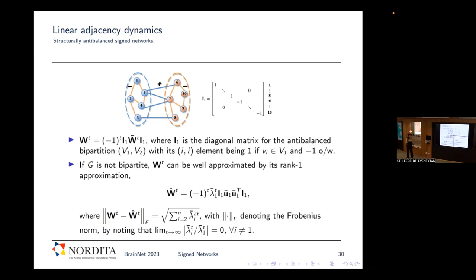A question was raised: depending on t, will the system be stable or unstable? The anti-balanced system oscillates, alternating signs between odd and even time steps. If you understand the system as W to the power t, it will be stable at even times and unstable at odd times.